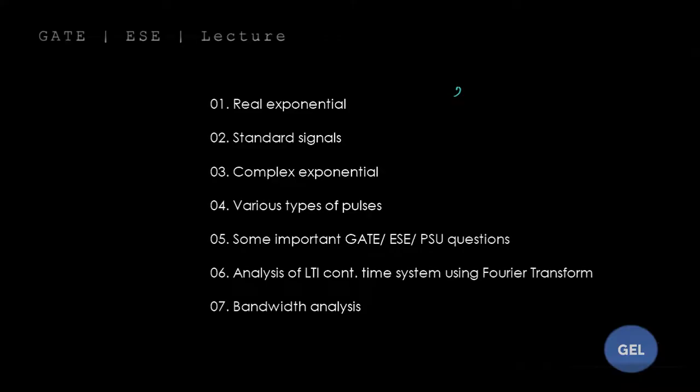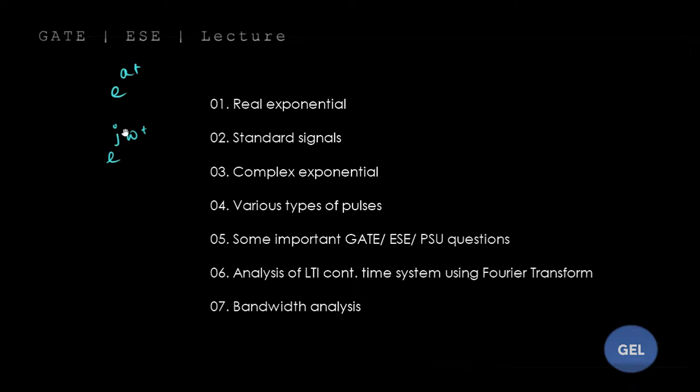e to the power 80 or e to the power minus 80 — this is your real exponential. This is your e^(j80), your complex exponential signal. A complex exponential signal must contain a frequency component, and it has a j here — that is the simple distinction.